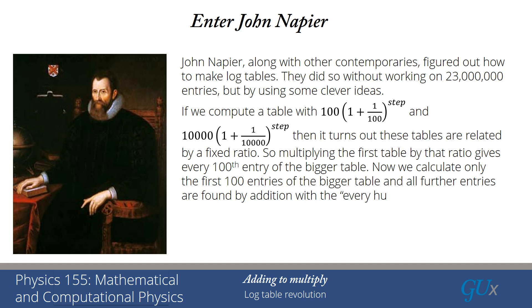So if I can multiply the first table by that ratio, it'll give every hundredth entry of the bigger table. The challenge is figuring out that ratio. It isn't such an easy thing to figure out. It's not directly or simply related to 1/10,000. It's a little bit more complicated. And that was what John Napier figured out.